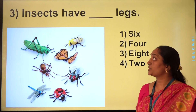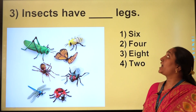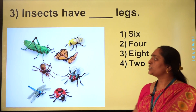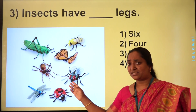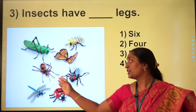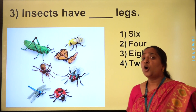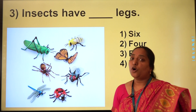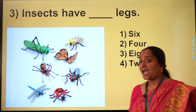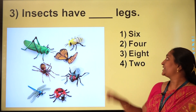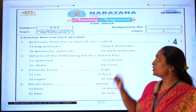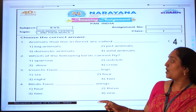Now the third question: insects have how many legs? You can see many insects over here like grasshopper, ladybug, housefly. Almost all the insects have 6 legs. So the correct option is 1.